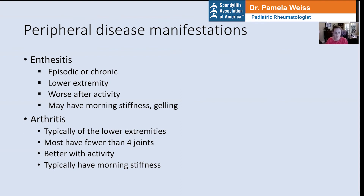In contrast, arthritis is usually better with activity. These are the kids that wake up in the morning feeling like they're 90 years old — it's hard for them to get moving, but the more they move, the better they feel. Like enthesitis, this typically affects the lower extremities, though there are also children who have enthesitis and joints affected in the upper extremities. The vast majority of children with spinal arthritis have what we call oligoarticular disease, where fewer than four joints are affected.